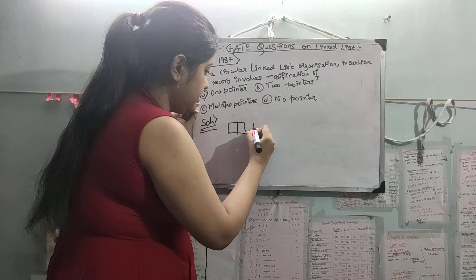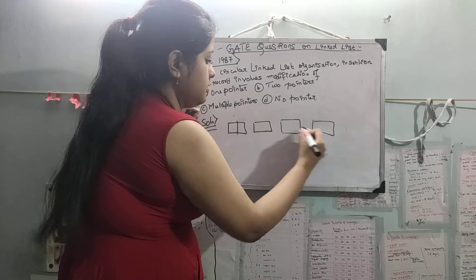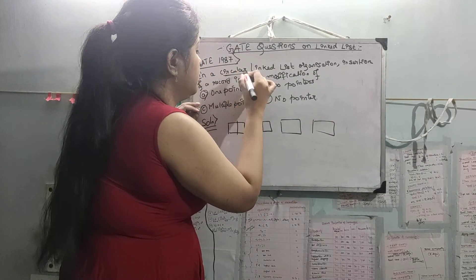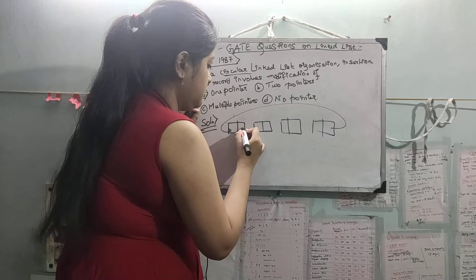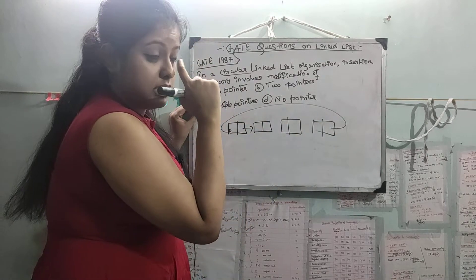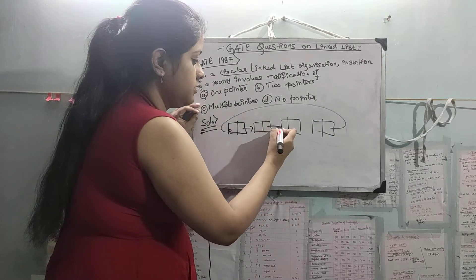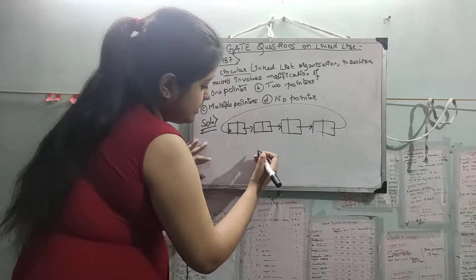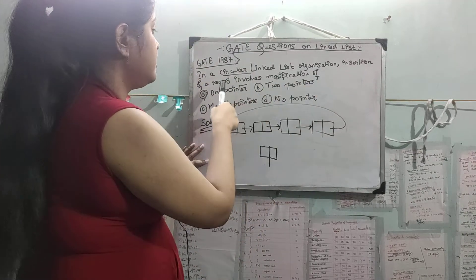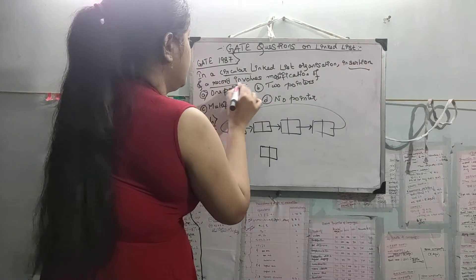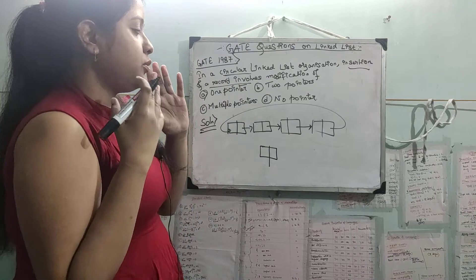Let's say this is our linked list. It is mentioned circular, so the last pointer will point to the first node. Now let's say this is a new node. Insertion of a record involves — we have already seen insertion. Now how many pointers are modified?